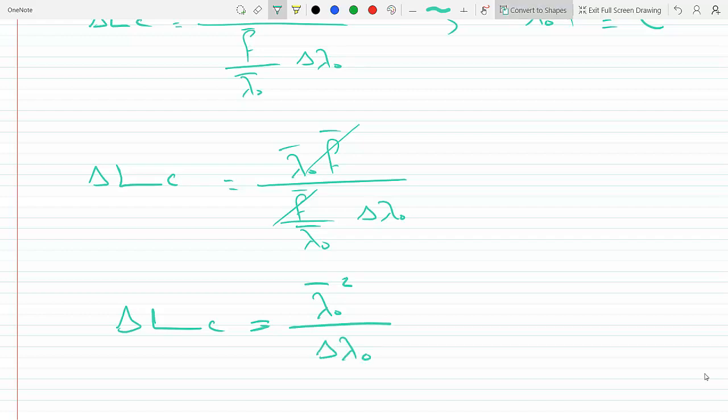But we know that λ₀ times the frequency, that is just the speed of the wave which is C. So I'm gonna replace C with that. So I'm gonna plug this here—this cancels out and I will get my coherent length equation to be λ₀ squared over Δλ.